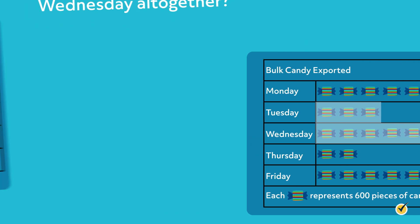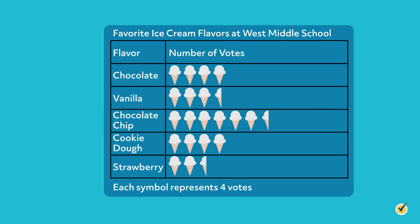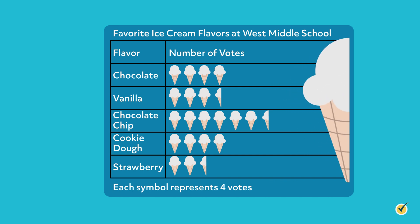Let's look at a new pictograph together. This pictograph is about favorite ice cream flavors of students at West Middle School. According to the key, each ice cream cone represents 4 votes. In this pictograph, some categories have half symbols. If a whole symbol represents 4 votes, then each half symbol equals half of 4, which is 2.